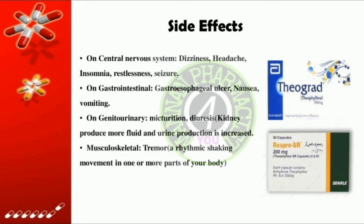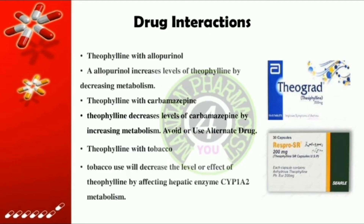The side effects of theophylline — those occurring in greater than 10% of patients — are as follows. On the central nervous system: dizziness, headache, insomnia, restlessness, and seizure. On the gastrointestinal system: gastroesophageal ulcer, nausea, and vomiting. On the genitourinary system: micturition diuresis — the kidneys produce more fluid and urine production is increased. Musculoskeletal: tremor, and arrhythmic shaking movement in one or more parts of the body.